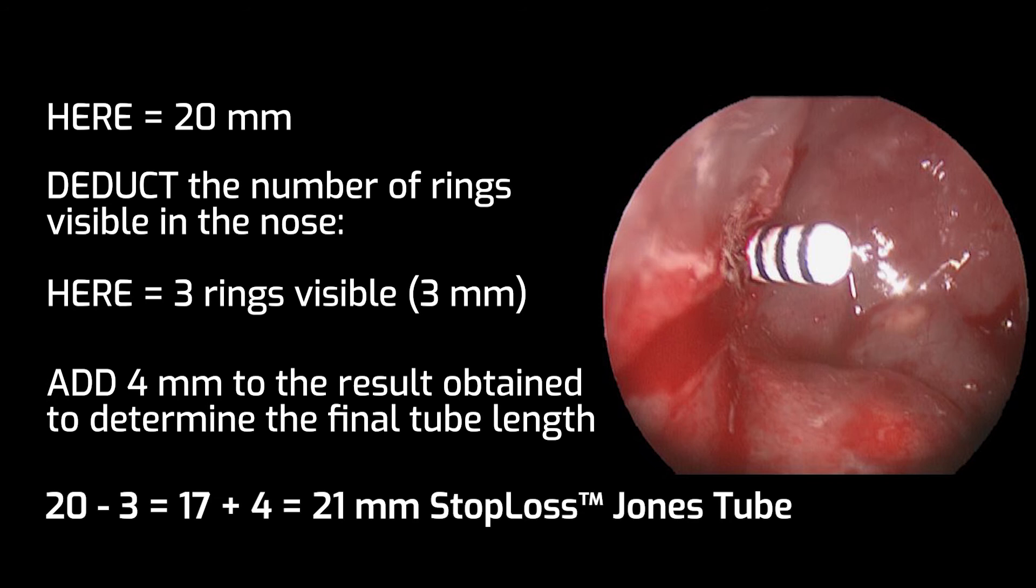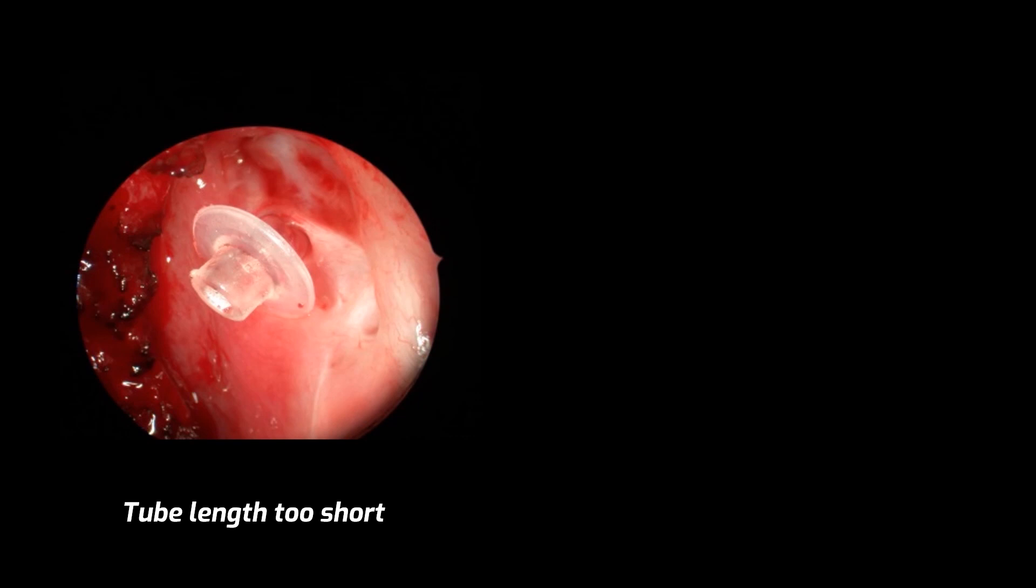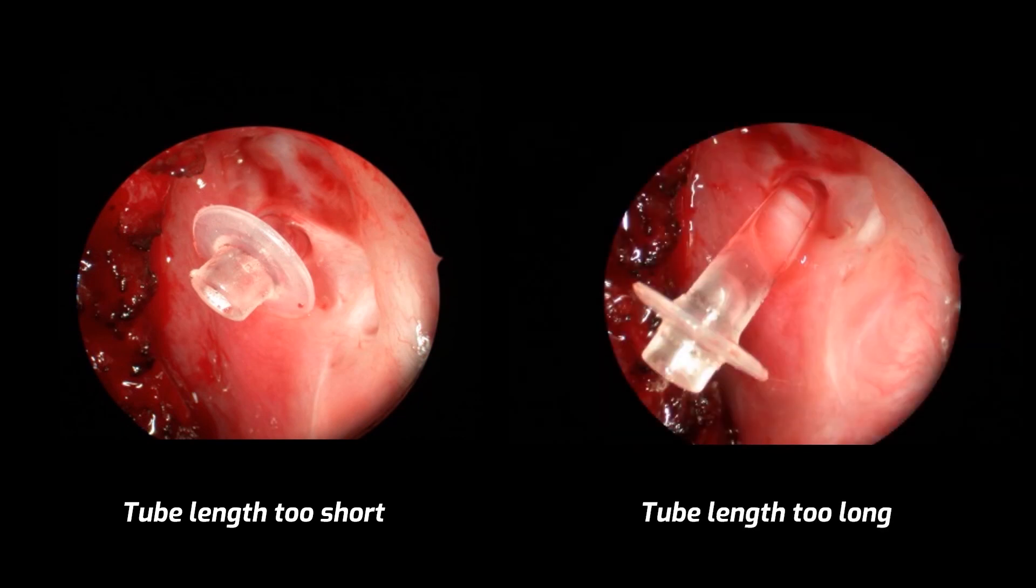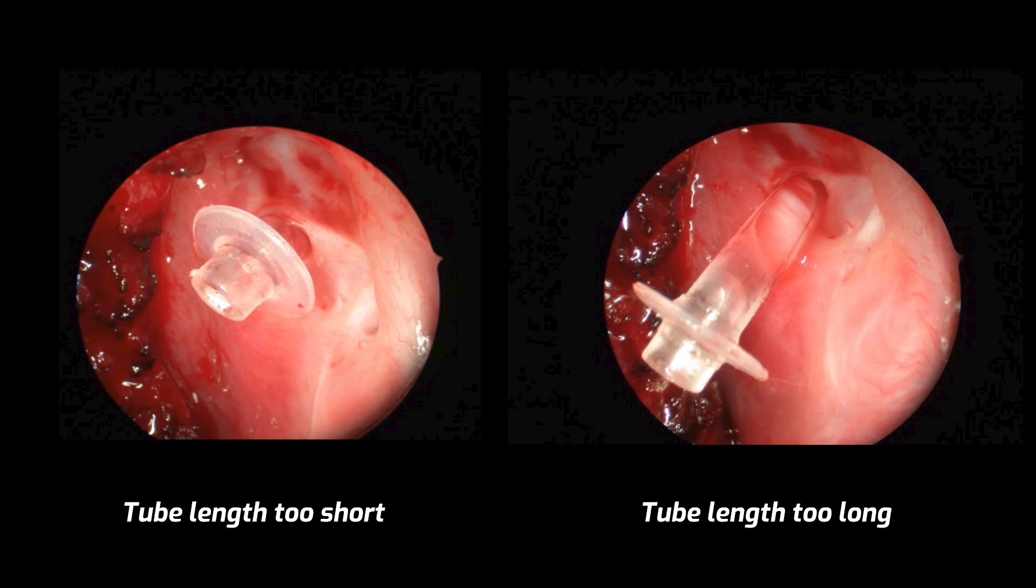The consequence of not following the necessary formula to calculate the appropriate length will position the internal flange either too close to the lateral nasal wall, or the tip of the tube too close to the septum.